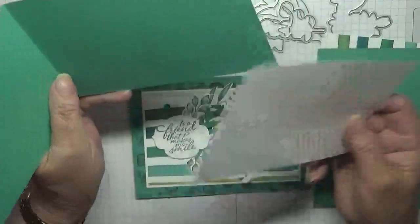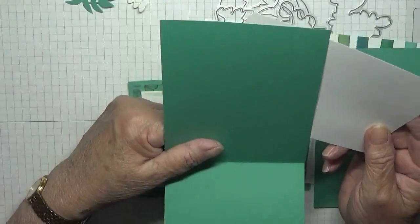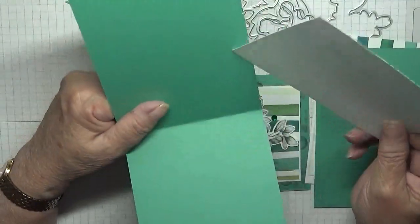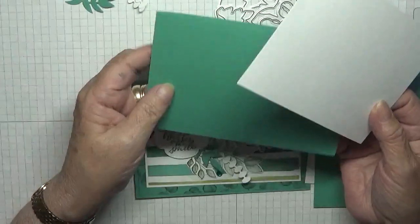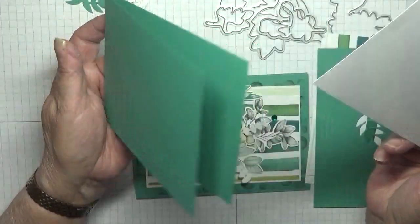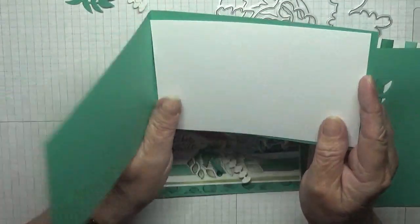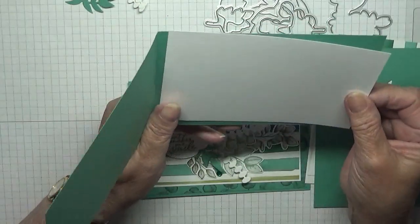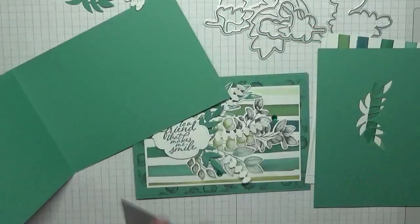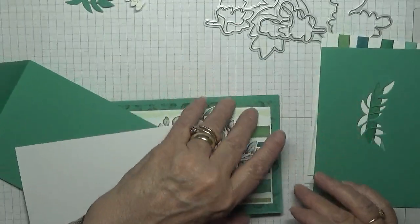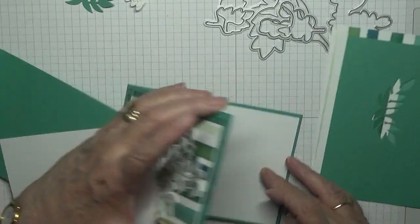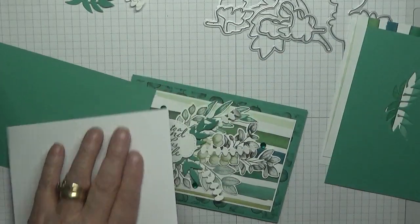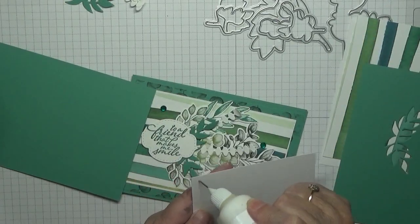I have got a card base of Just Jade of 11 and 3/4 by 4 and 1/8, scored and folded at 5 and 7/8. A piece of white at 5 and 5/8 by 3 and 7/8 that will just get glued straight in because we didn't do anything inside. So let's glue that in now.